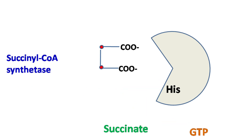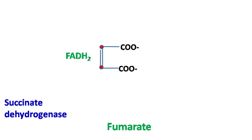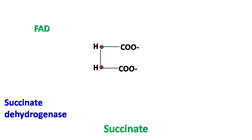Succinate dehydrogenase then converts succinate to fumarate with the help of FAD, which gets converted into FADH2. This is a reversible reaction.